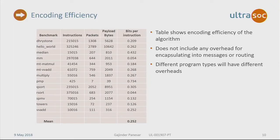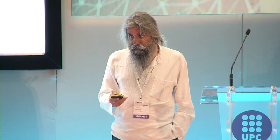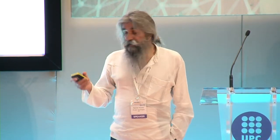We did some benchmarks. We took some routines fed into Spike, took the same routines and fed those into the encoder, and this is the efficiency we get. Clearly it depends on the type of program you have — the more branches and unpredictable PC events you have, the more bits you have to send. But I think that's a fairly reasonable coding efficiency. Note this does not include any overhead you would need to route it off chip — this is what comes out of the encoder.